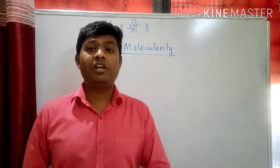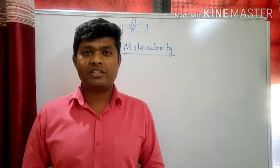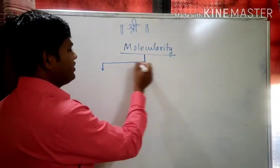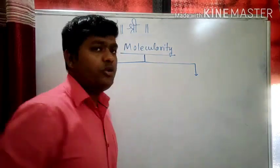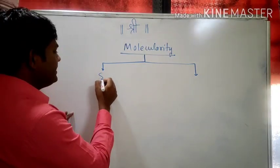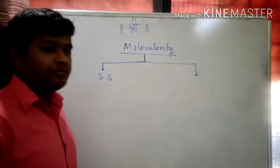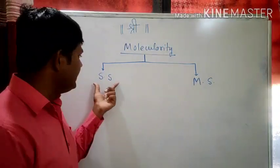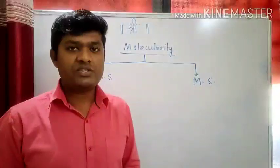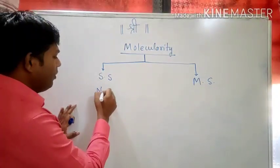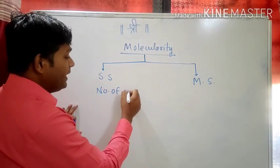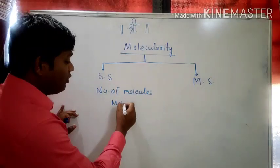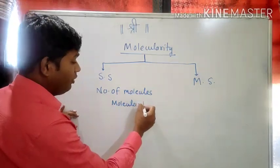Out of many steps which are involved in a multi-step reaction, you have to predict the slow step. To understand the molecularity of the reaction you have to classify the reactions into single step reaction and multi-step reaction. If the reaction is single step, see the number of molecules involved in that reaction, and that number of molecules will be the molecularity of the reaction.